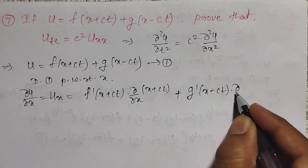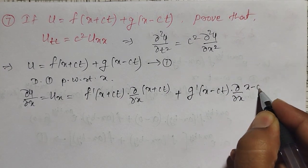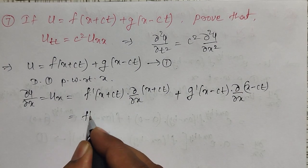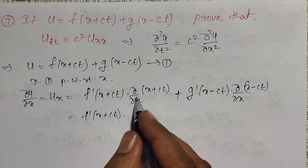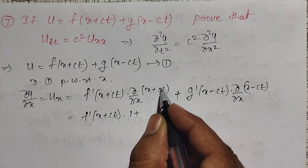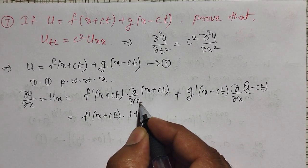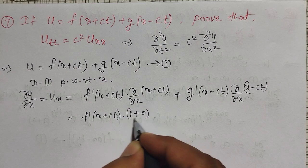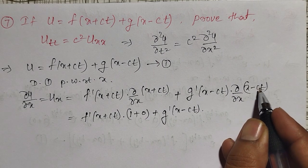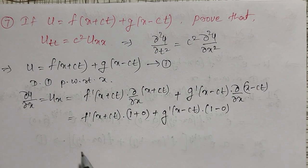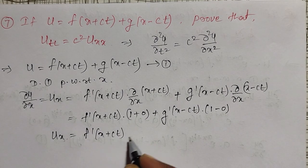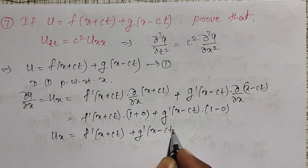Simplifying: the partial derivative of (x + ct) with respect to x is 1, since c and t are treated as constants, giving zero for the ct term. Similarly, the partial derivative of (x - ct) with respect to x is also 1. So u_x = f′(x + ct) + g′(x - ct). This is the first order partial derivative with respect to x.